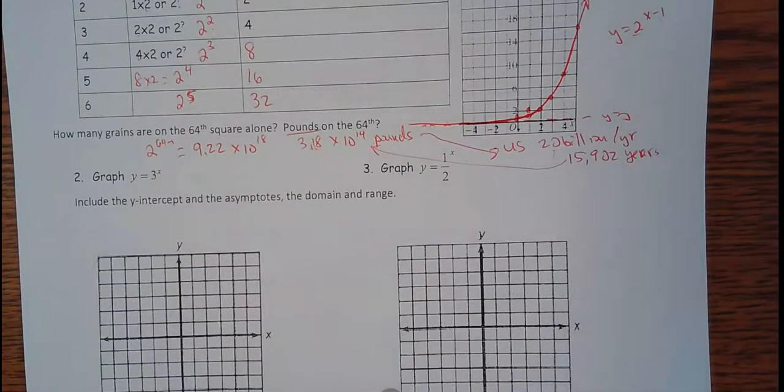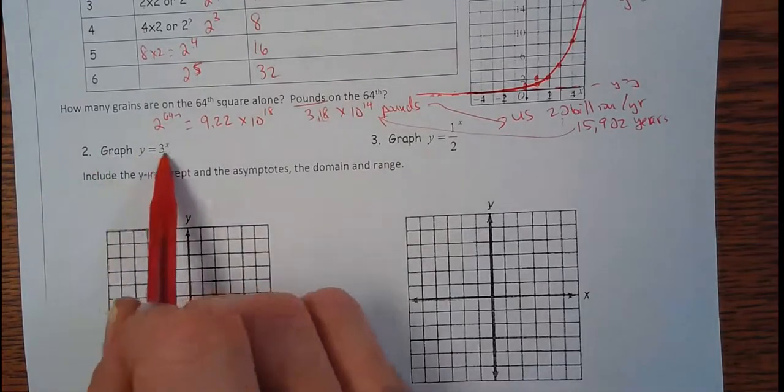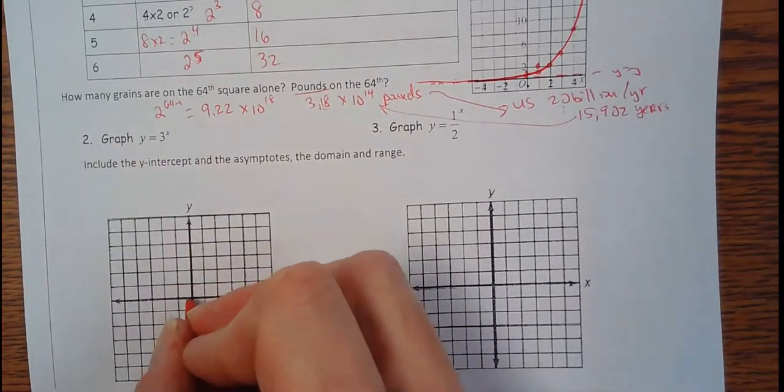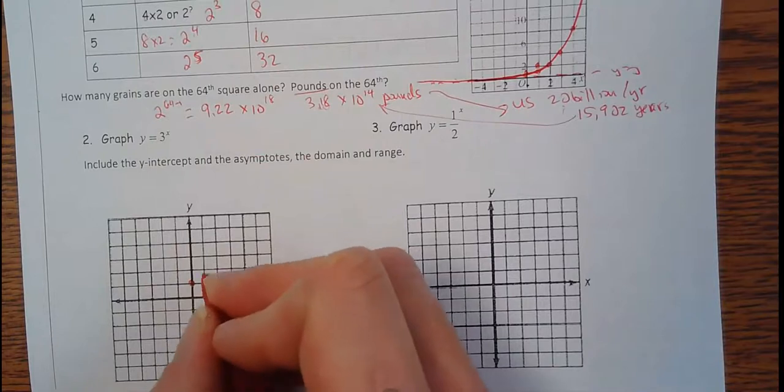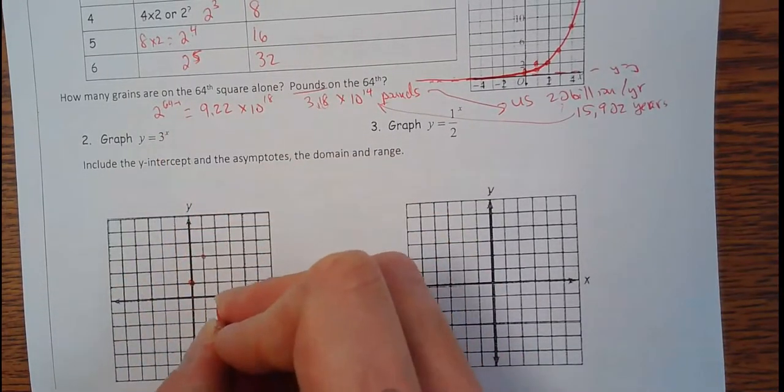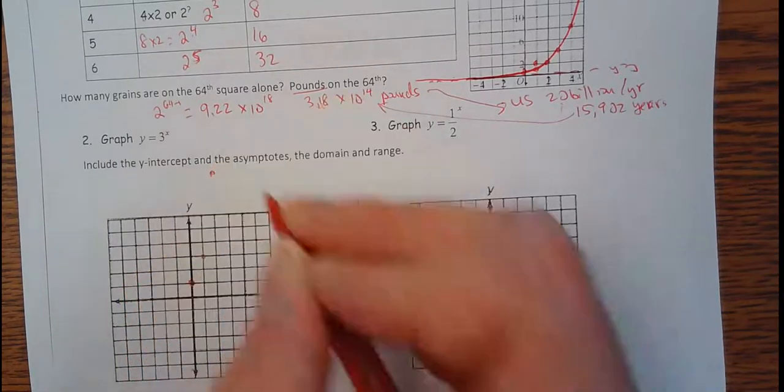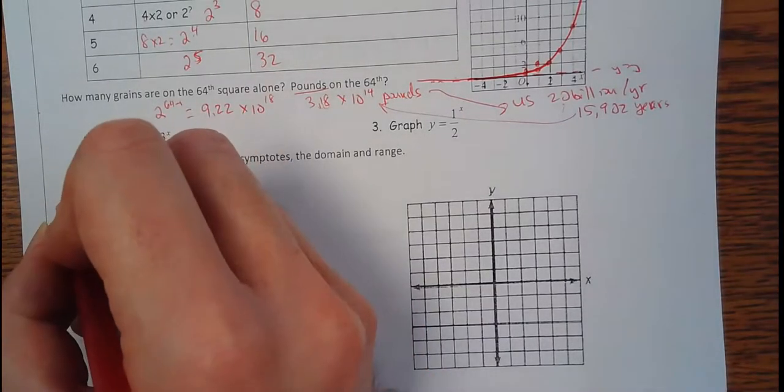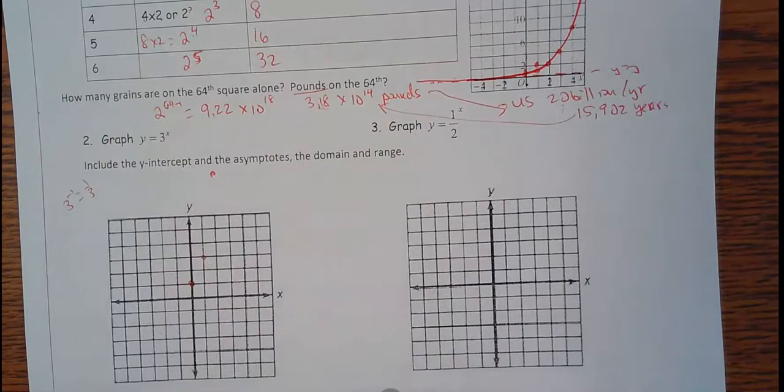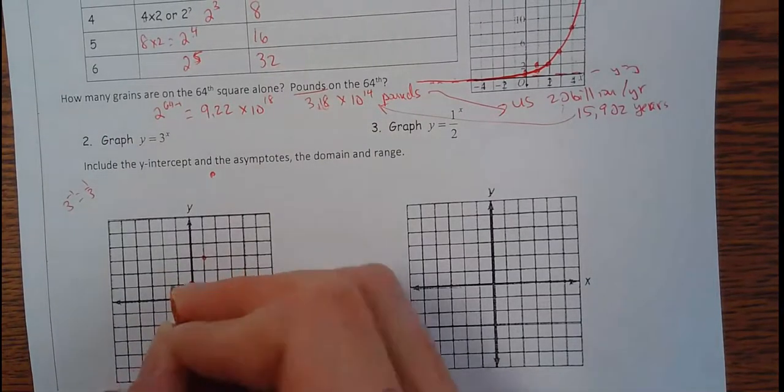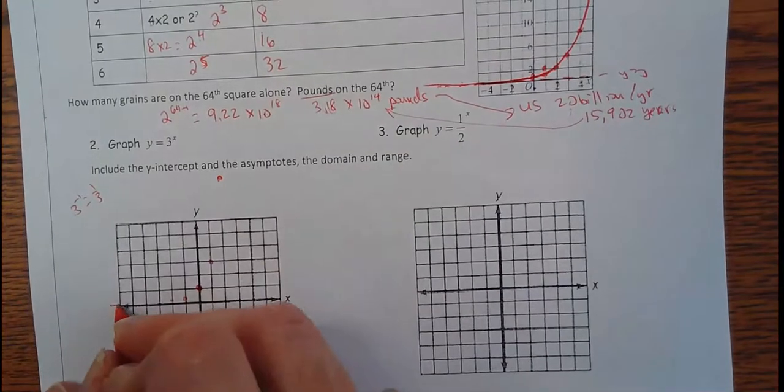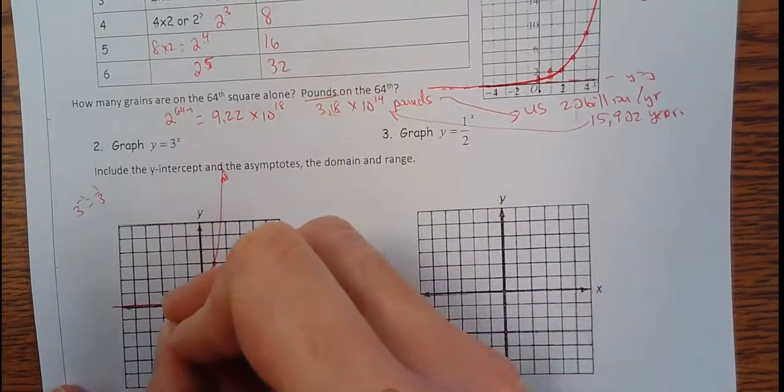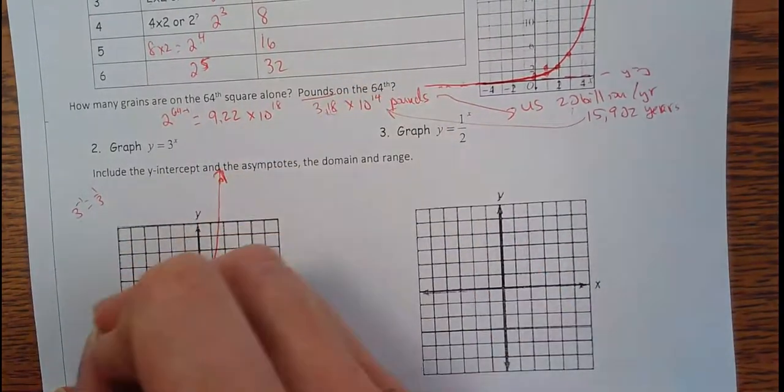We're going to graph y equals three to the x. Make a T table in your head. If I plugged in zero, that'd be one. If I plugged in one, three to the first power is three. If I plugged in a two, that'd be nine. If I go backwards, if I plug in a negative one, three to the negative one is actually one third, still a positive number. So this would be a third and then a ninth. It's going to keep getting smaller, but it's going to follow along that x axis and then take off like this.